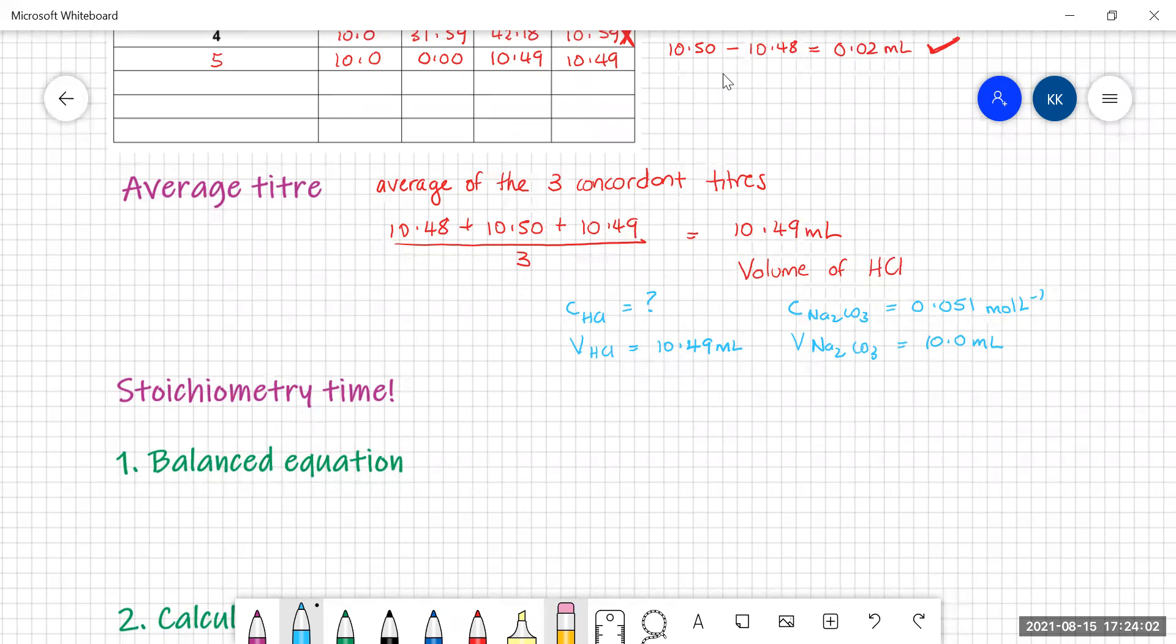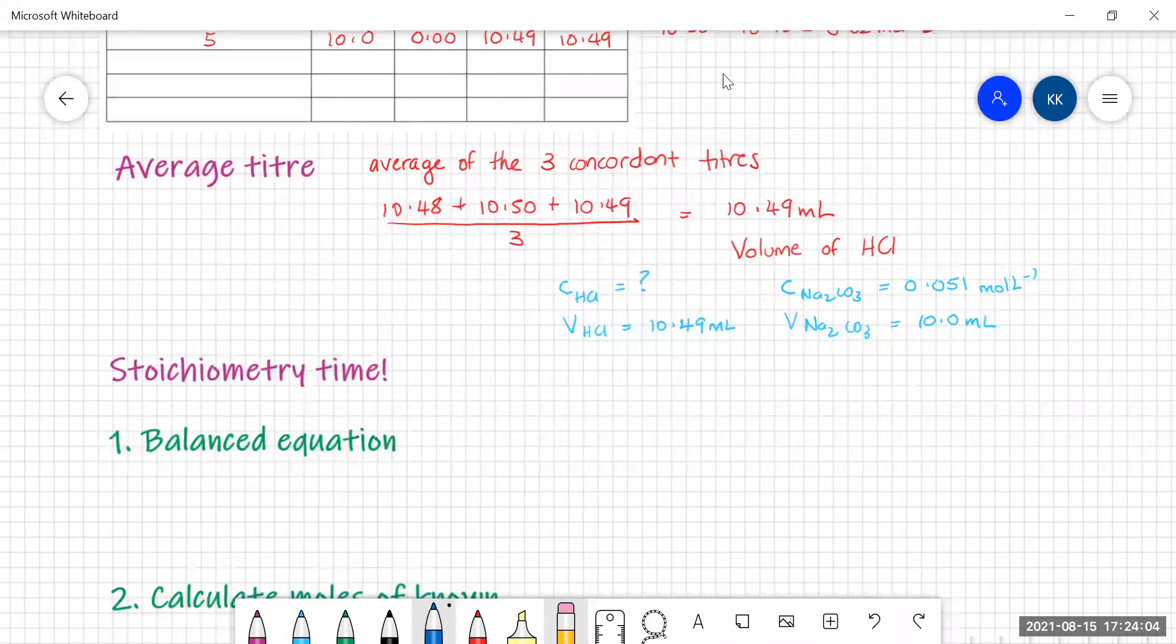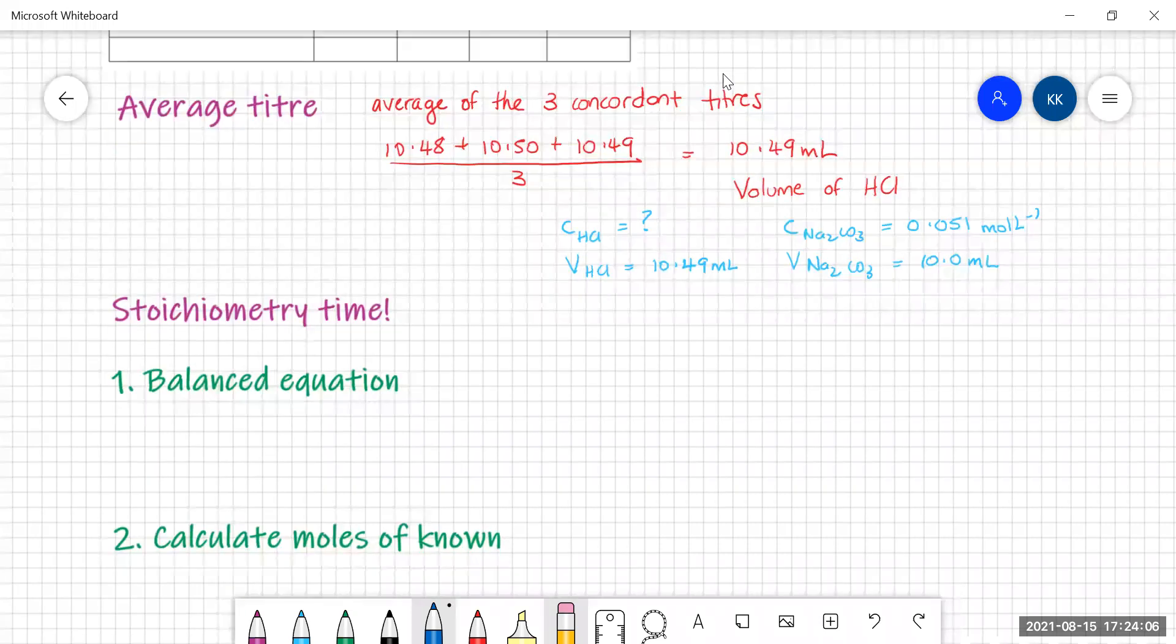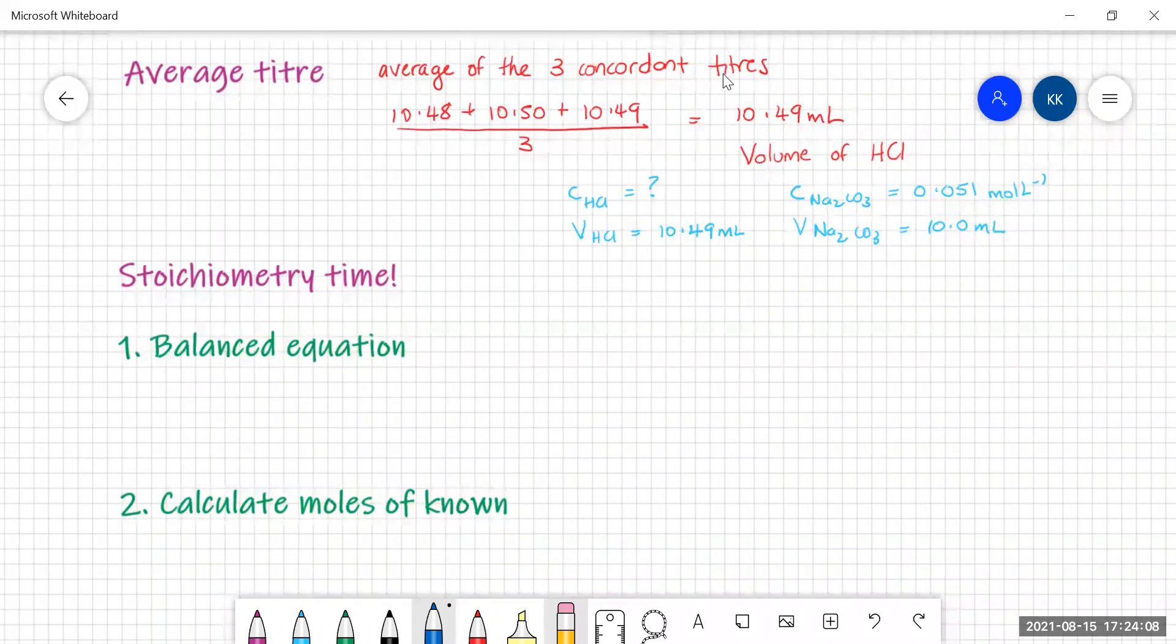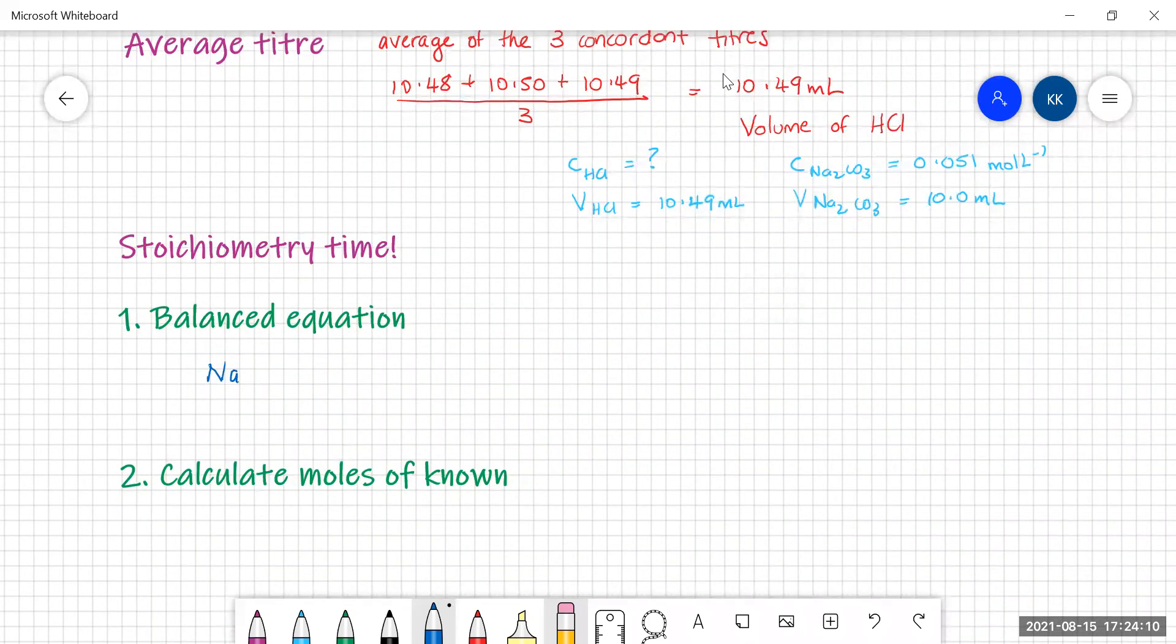We start with a balanced equation. So our equation is sodium carbonate and hydrochloric acid. Now one of the mistakes that I see students make over and over again is getting the formula of sodium carbonate wrong.